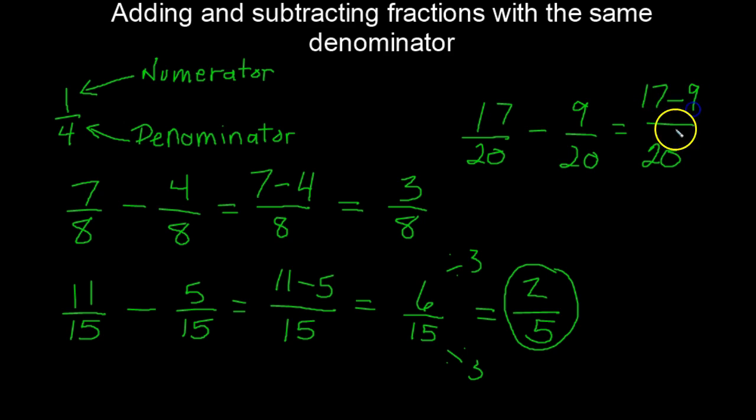Four will go into eight, so we divide by four, and we can divide the denominator by four as well. Whatever you do to the numerator, you have to do to the denominator. Eight divided by four is two, and twenty divided by four is five, giving us two fifths.